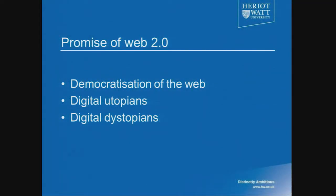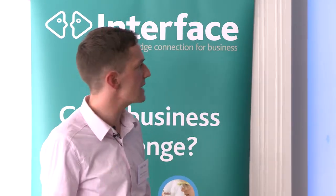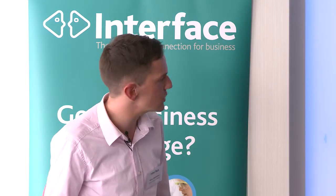We tried to understand what this means for community empowerment and what's happening with these community assets, setting it in the literature on the promise of Web 2.0. There's a lot of talk that Web 2.0 is democratising the web — we are all now making web content through Facebook pages and tweets. Within the literature this varies from digital utopians, who say this will transform the world and give everyone a voice in how services are delivered, to digital dystopians, who worry about photos being taken without consent and social media becoming a disaster.